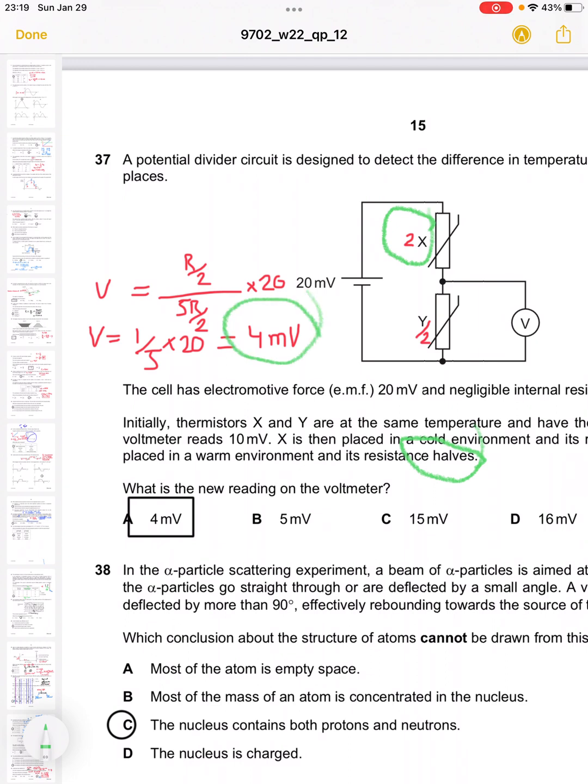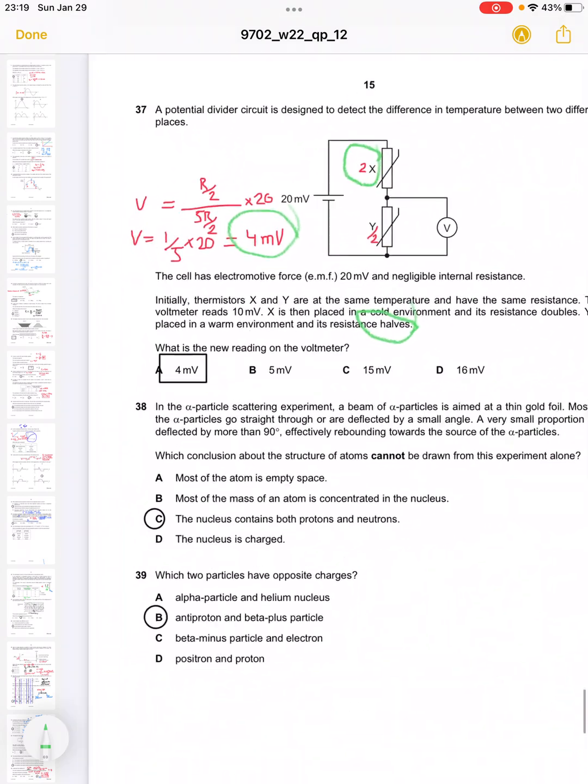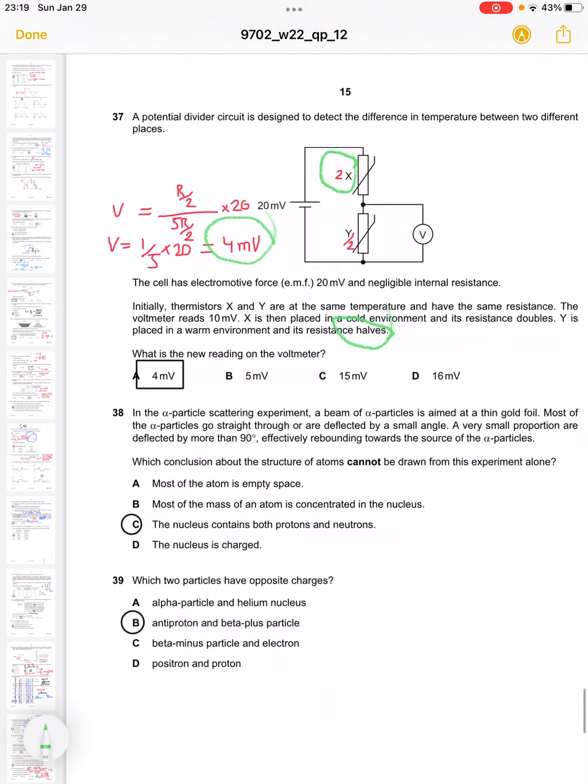Question 38 asks which conclusions about atoms cannot be drawn from the alpha scattering experiment. The alpha scattering experiment does not tell that the nucleus contains both protons and neutrons. We do know it says about dense and positively charged particles, but not particularly regarding protons or neutrons.